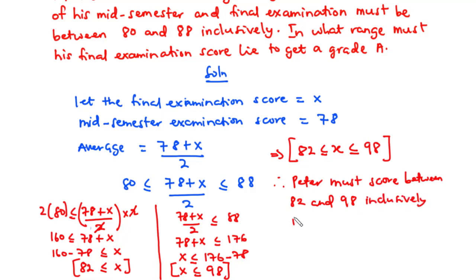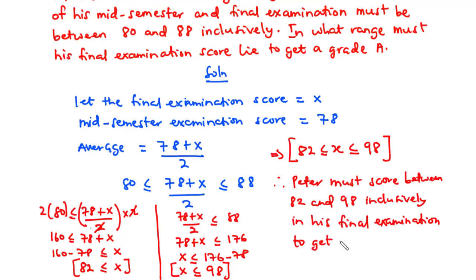Peter must score between 82 and 98 inclusively in his final examination to get an A. That's it for today's video. Thanks for watching and see you in my next video, bye bye.